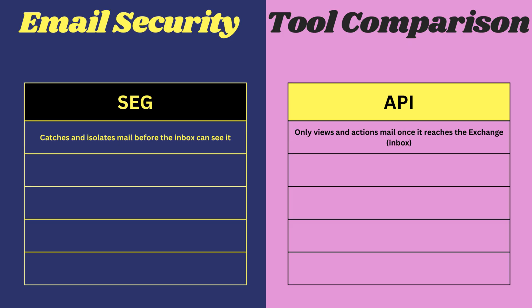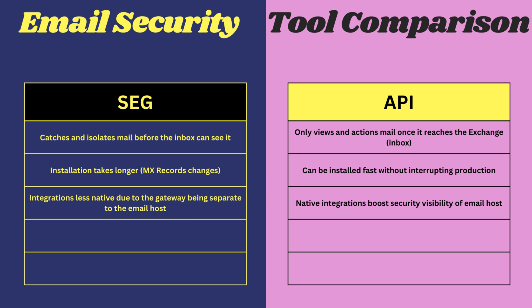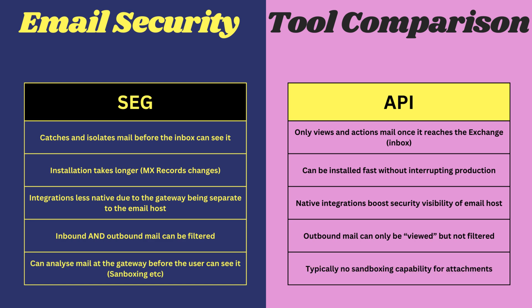Here's a direct comparison of the pros and cons. Number one: secure email gateways catch mail before reaching the inbox, whereas an API email gateway only actions mail once it reaches the exchange — the mailbox. Number two: API email security tools are much simpler to install; a secure email gateway requires a project for configuration. Number three: API tools are normally integrated natively with the host; gateways can have these integrations but they're typically not as native. Number four: secure email gateways are inline, allowing them to stop outbound emails — API solutions cannot, because by the time the API tool reads the sent items folder, the email has already been sent. Number five: API tools typically don't use sandboxing, so if that's a requirement, a gateway might be a better option.